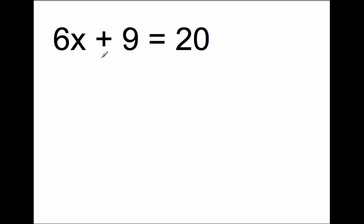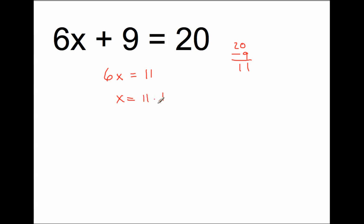Let's do this the shorter way. Instead of adding 9 to 20, I'm going to take 9 away from 20. So 6x equals 20 minus 9, which is 11. Then, instead of multiplying 11 by 6, I'm going to multiply by the inverse — the reciprocal of 6, which is 1 sixth. So x equals 11 times 1 sixth, which is 11 over 6. x equals 11 sixths.